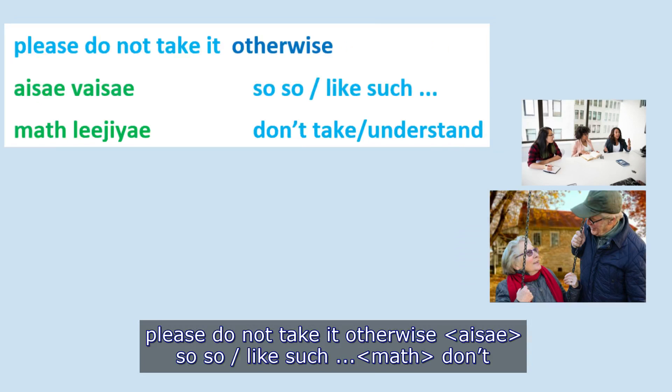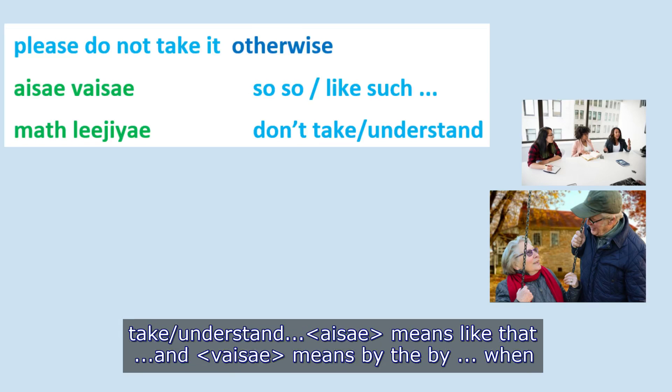'Eise veise' means so and so, or like such. 'Mathliji' — don't take or don't understand. 'Eise' means like that and 'veise' means by the way.